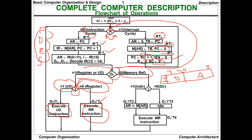For memory reference instructions, D7 equals 0. Here I is checked again: when I=0 it is direct addressing; when I=1 it is indirect addressing — D7-dash, I, T3 — and M[AR] is transferred to AR. Then memory reference instructions execute, and the process continues cyclically.